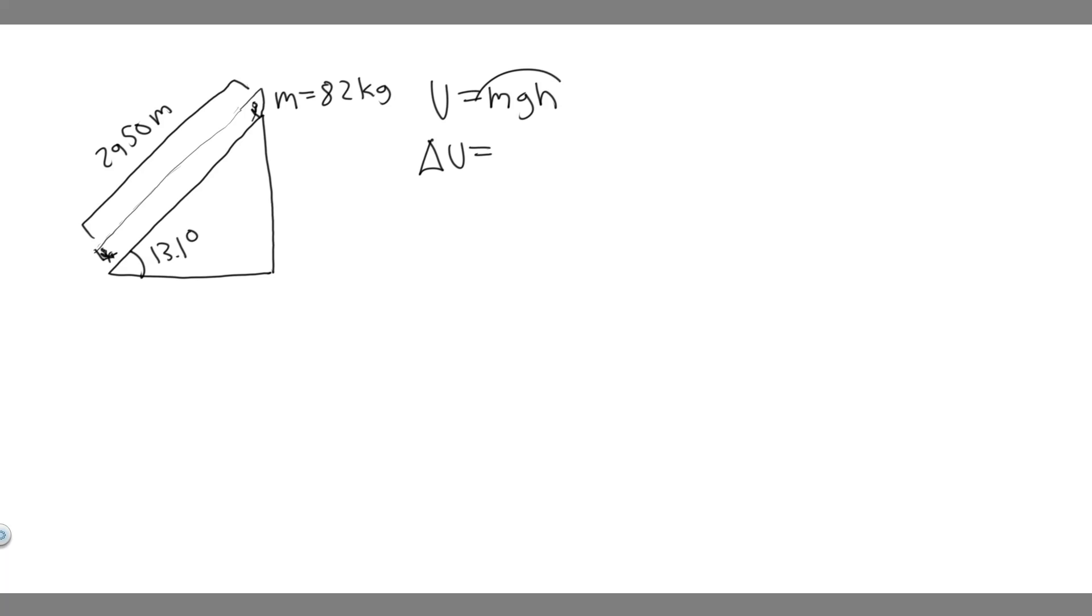So if this is the formula for it, the final is just going to be mgh final. Since these are constants - the mass of the person isn't going to change, g isn't going to change - this is going to be the final, and then we minus the initial, mgh initial.